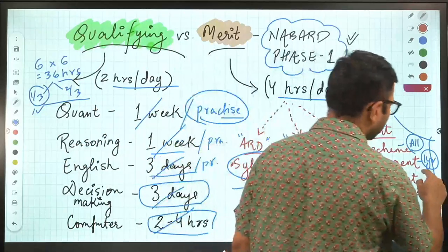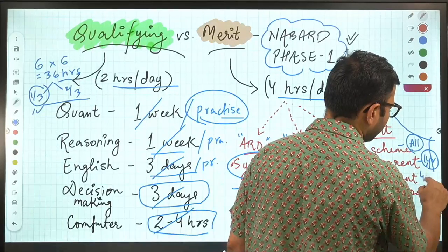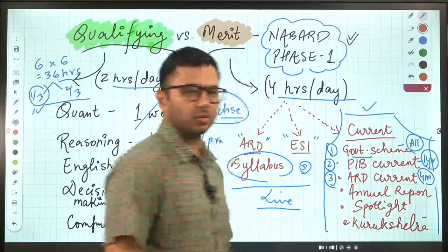ARD current. Six months is more than enough. Even four months should be good. Not more than that. That will not be needed.